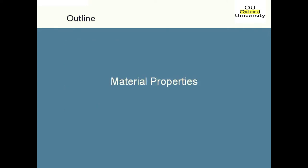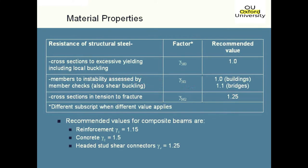Starting off with the material properties part. The material properties are covered in section 3 of the code and some of the partial factors are outlined on this slide here. These partial factors take into account the variations in the material strength and the scatter of test results from a particular design resistance model. If you look at those partial factors, you will notice that if you've got a cross section that has excessive yielding including local buckling, gamma M0 is actually 1.0, so you don't really have a gamma factor there.